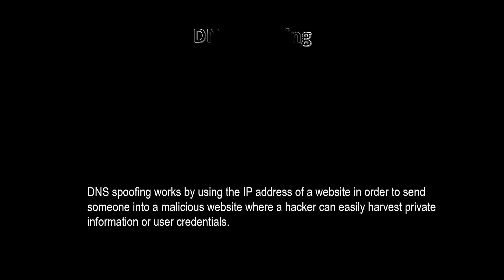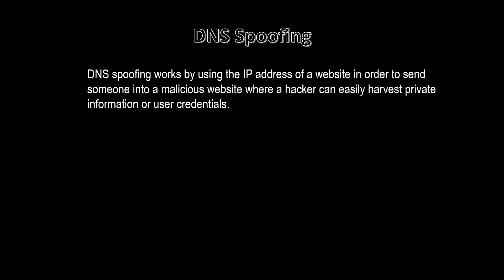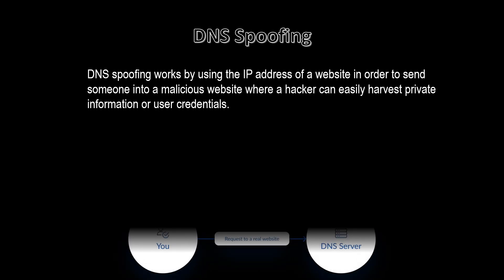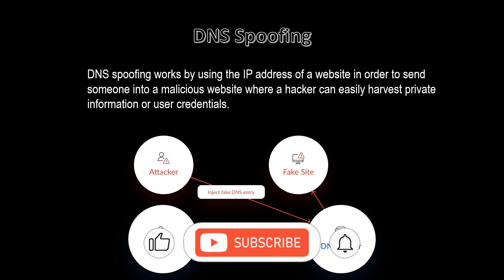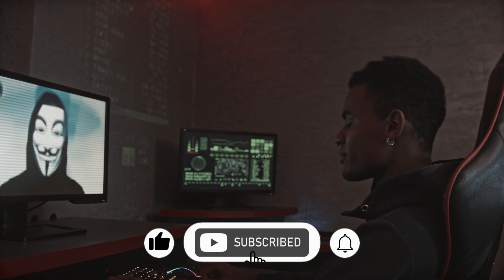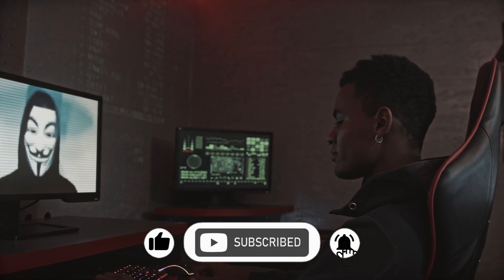The second is DNS spoofing. DNS spoofing works by using the IP address of a website in order to send someone to a malicious website where a hacker can easily harvest private information or user credentials. This man-in-the-middle attack allows you to communicate with an unsuspecting target, making them think they have entered a legitimate website, while a hacker freely receives account details entered on that false website.